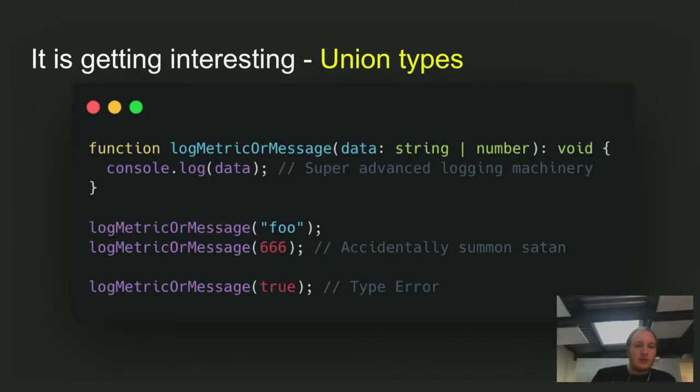It's getting a bit more interesting now. TypeScript also has union types, which is not very common in programming languages. But we will see how that plays out. So here we have a function that takes a log metric or message that can either be a string or a number. So that's why the pipe. So the first line log metric or message foo type checks, of course, because it is a string. Log metric or message 666 also type checks because it's a number. But if we try to pass in true or anything else, an object or an array, this would throw a type error. So again, we can use the dynamic nature of JavaScript and still retain the type safety we have in our program, which is pretty nice.